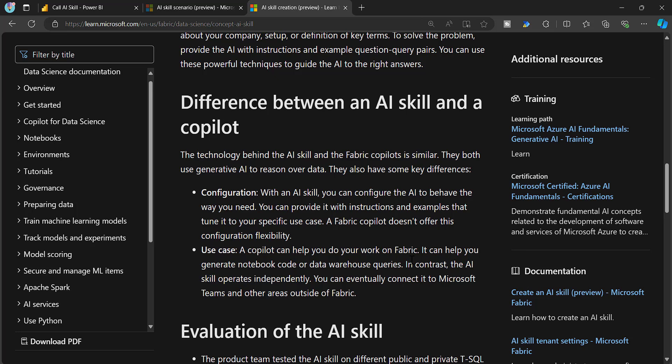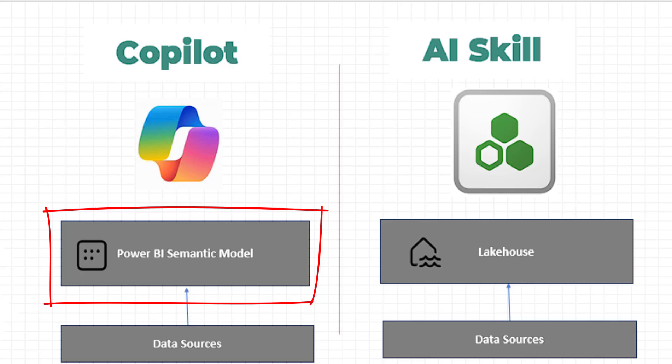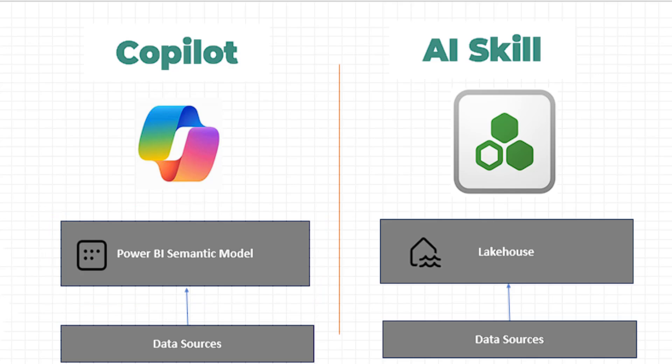From an insight generation perspective, Power BI Copilot is the right choice for business users to get proper insights — but for that, you need to build a semantic model with all the tables, relationships, and business logic as DAX measures. Whereas if you go with AI Skill, that also gives you an insight generation option, but it works directly on top of the tables using SQL queries. That is the main difference.